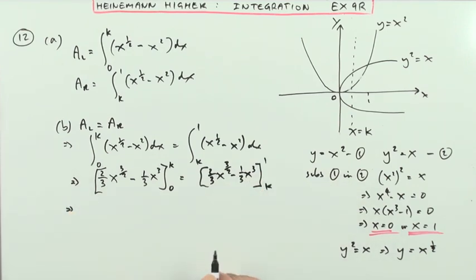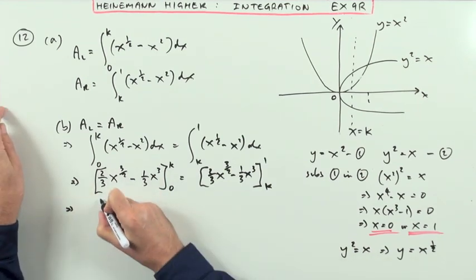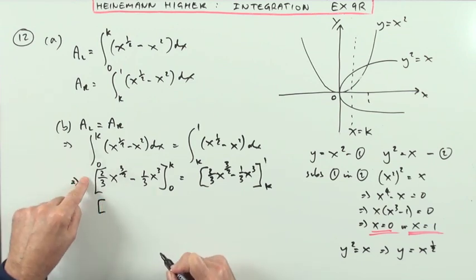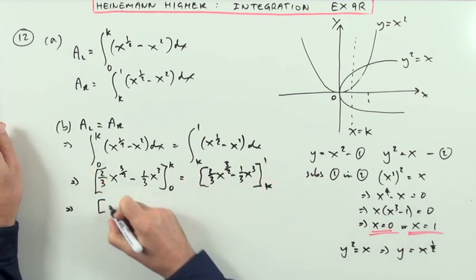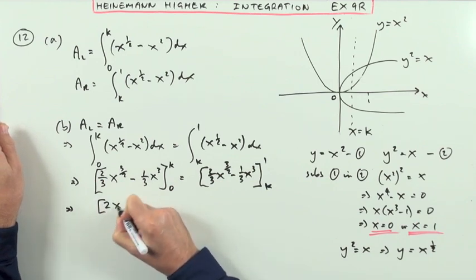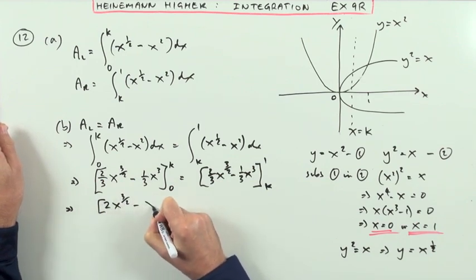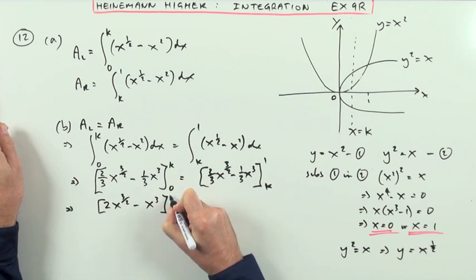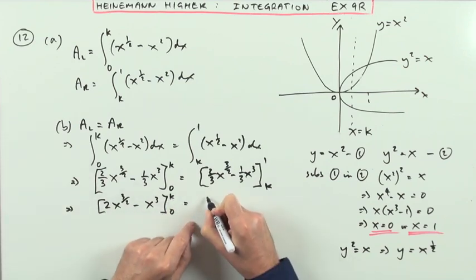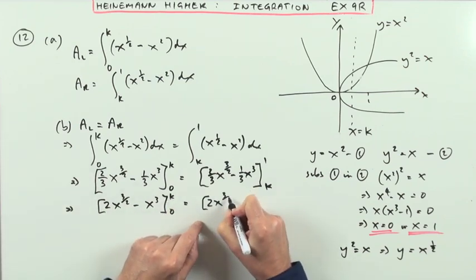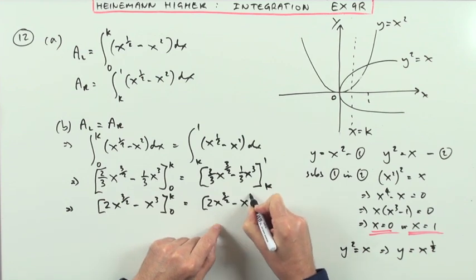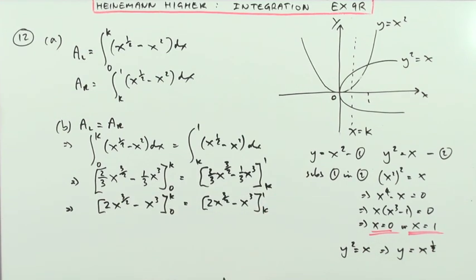Now one thing I can do straight away is this. A third is appearing in every single term. So I could take a third straight out of it. It would appear as a common factor here and a common factor there, and thereby disappear. So I could just rewrite this as 2x to the 3 upon 2 minus x cubed. Evaluated at 0 and k. Equals. Same again. 2x to the 3 upon 2 minus x cubed. Evaluated at k and 1.